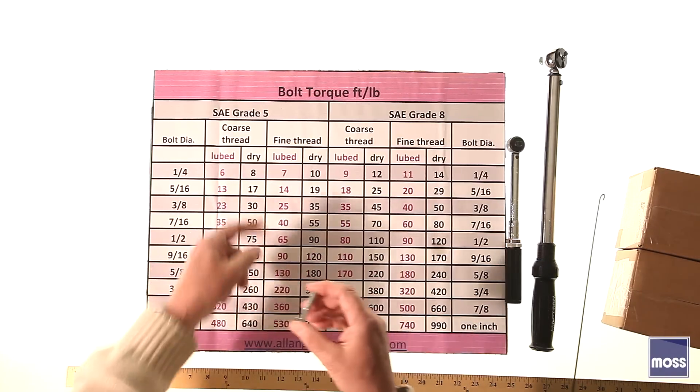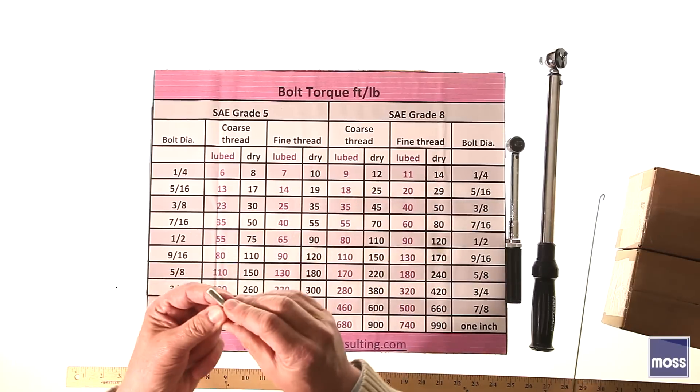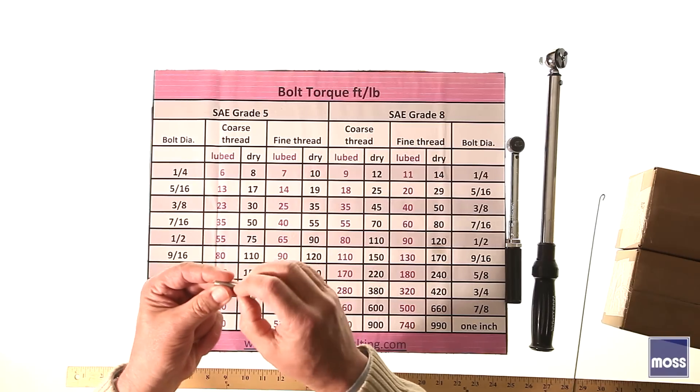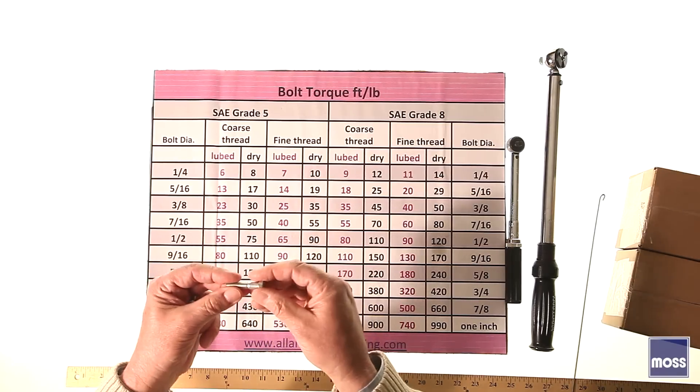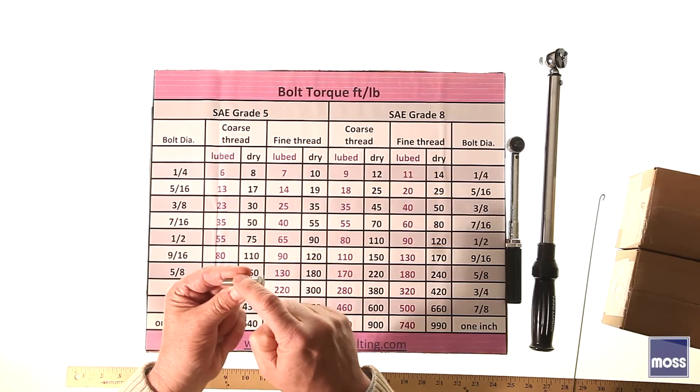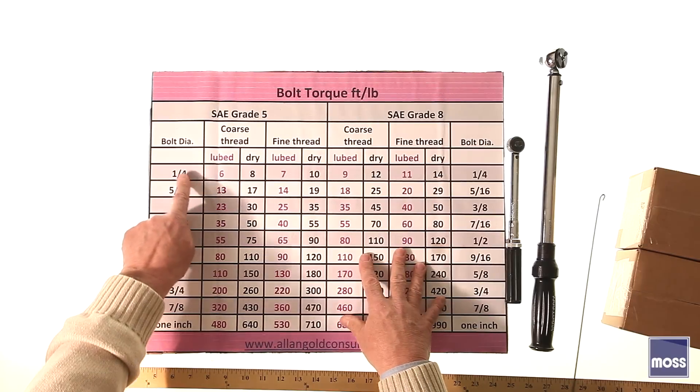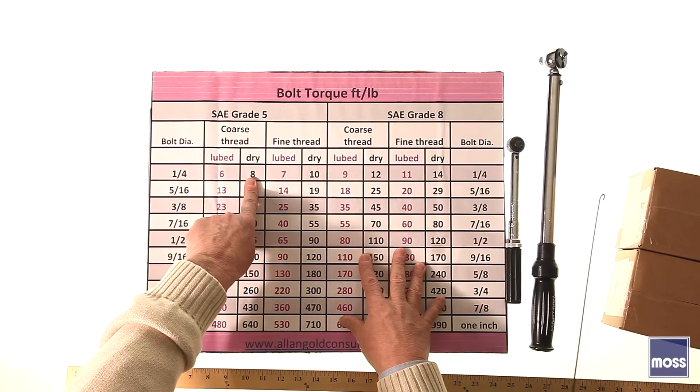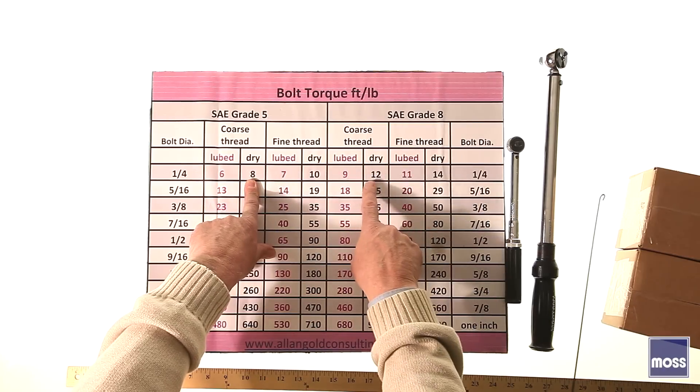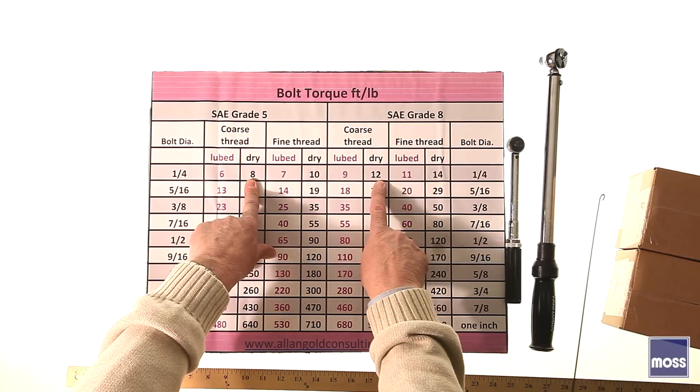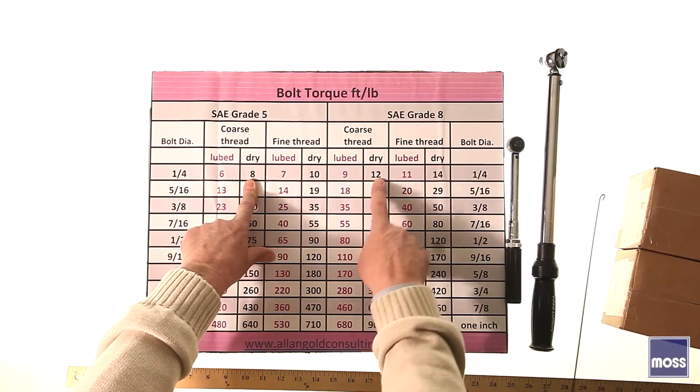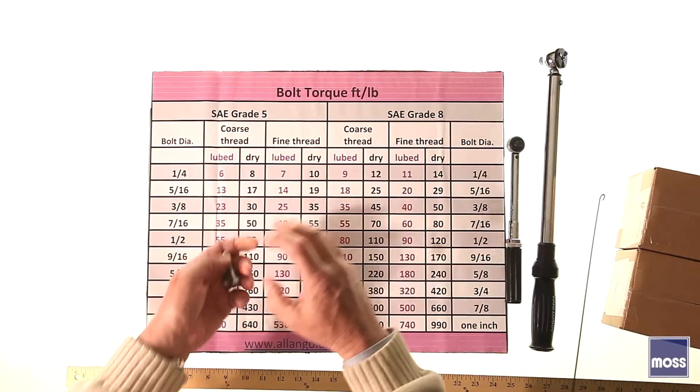The last thing is what's referred to as grade. You see grade five and grade eight. The grade refers to the hardness of this material. They can make these out of different kinds of metals. They can treat them with heat, chemicals, or a combination of both, and the end result is this is harder. If it's harder, it's going to resist stretching, so you have to use more torque. A quarter-inch dry coarse-threaded bolt is going to take eight foot-pounds if it's a grade five. A quarter-inch dry coarse thread in grade eight is going to take 12 foot-pounds, 50% more, simply because this is a grade eight bolt. It's harder to stretch.